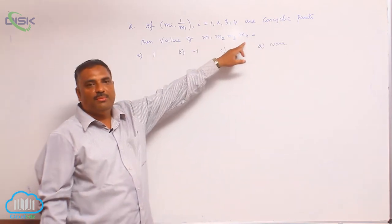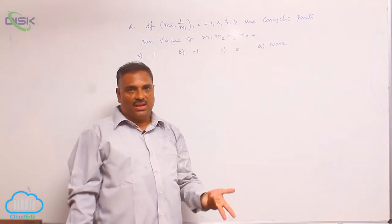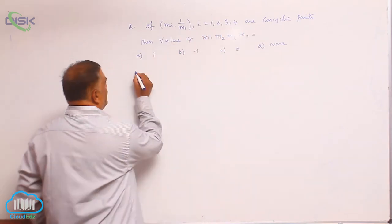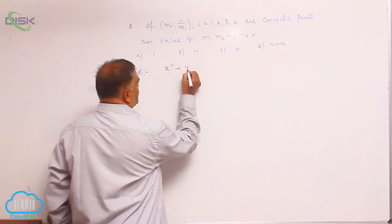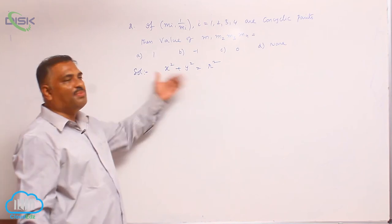Then the value of m1, m2, m3. So for concyclic points we require any circle equation. Let us consider solution. x square plus y square is equal to r square is the smallest possible circle.